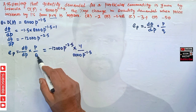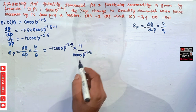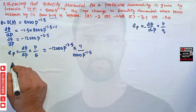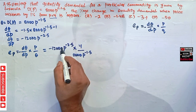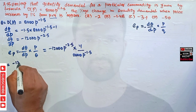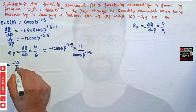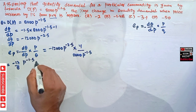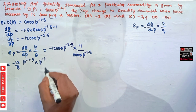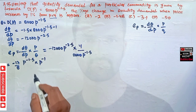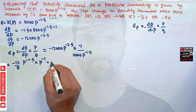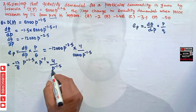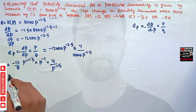Simplifying: we have -12,000 divided by 8,000, so the three zeros cancel, leaving -12/8. For the p terms, we can write p^(-2.5) as p^(-1.5) * p^(-1), since the bases are the same and -1.5 + (-1) = -2.5. Multiplying by p/p^(-1.5), the p^(-1.5) terms cancel.